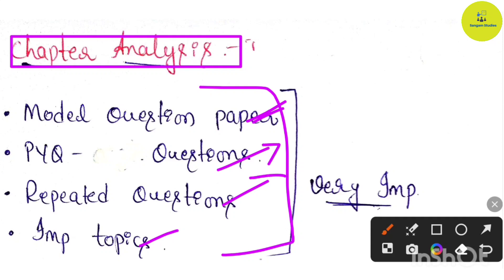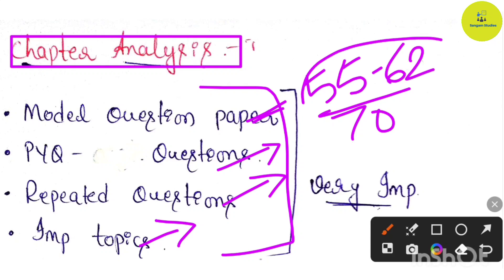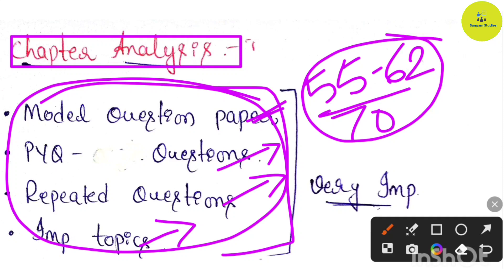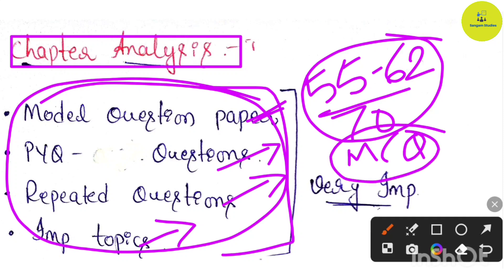Focus on PYQs — previous year questions — and repeated important topics. Out of 70, you can easily score between 55 to 62 marks. MCQs — multiple choice questions — are also going to be introduced, and they can be found in NCERT. Completing the syllabus will directly help you with the MCQs.